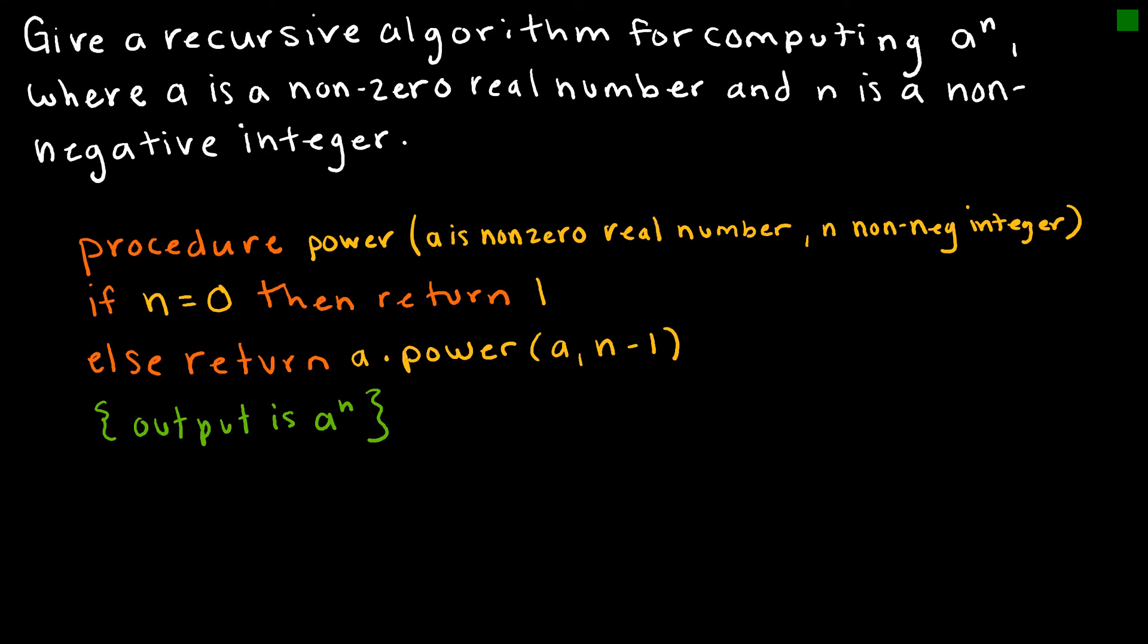Let's look at one more algorithm. This says give a recursive algorithm for computing a to the n where a is a non-zero real number and n is a non-negative integer. My procedure is just a power. I'm taking some number to a power. The process says if n is zero, then return one because that would mean it's some number to the zero power, which is always one. Otherwise, we're going to return a times the power of a comma n minus one.